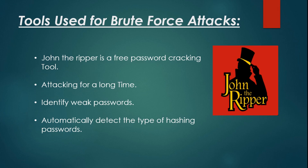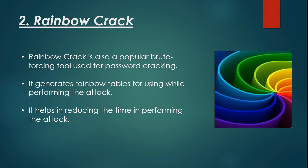You can also use John the Ripper with a dictionary of passwords to perform a dictionary attack. So let's move on to the next tool: RainbowCrack. RainbowCrack is also a popular brute forcing tool used for password cracking. It generates rainbow tables for use while performing the attack. In this way it is different from other conventional brute forcing tools. Rainbow tables are pre-computed, which helps reduce the time in performing the attack. To save time you can download those rainbow tables and use them in your attacks. It is available for both Windows and Linux and supports all latest versions of those platforms.